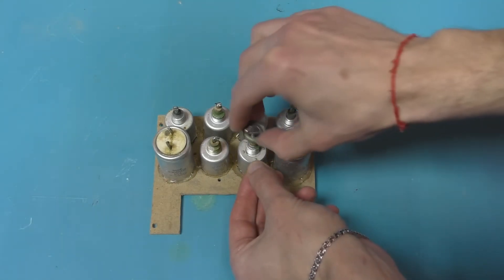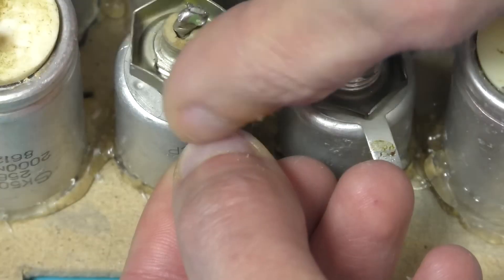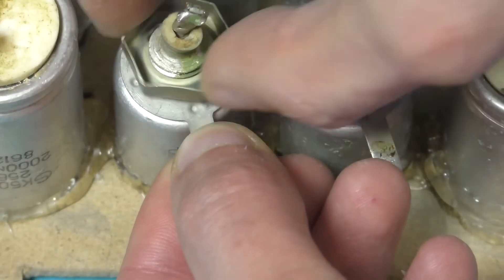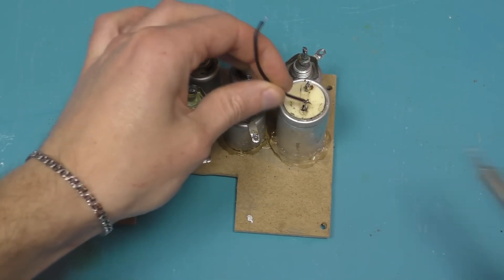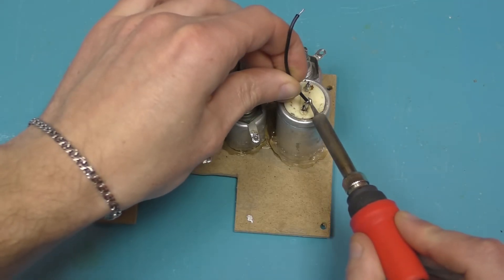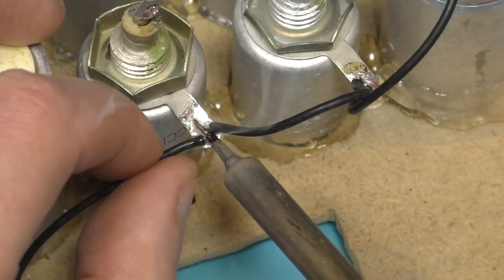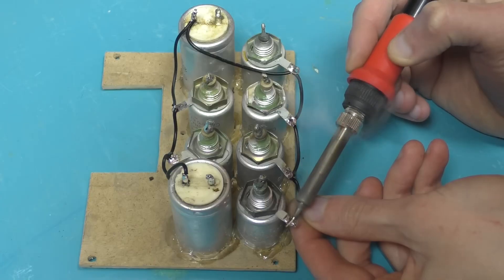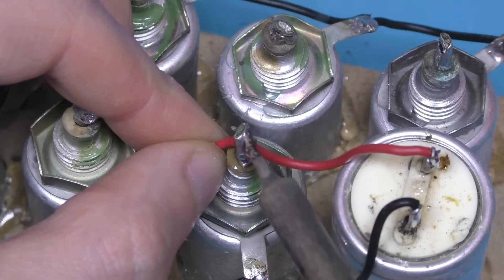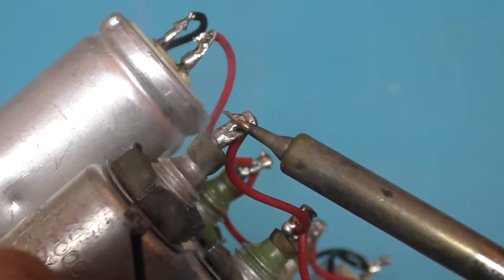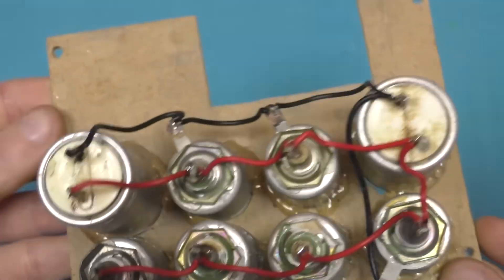Reattach the terminals that were originally removed due to being an obstruction. Connect all the capacitors in parallel by joining the positive terminals together and the negative terminals together. This is how everything should look.